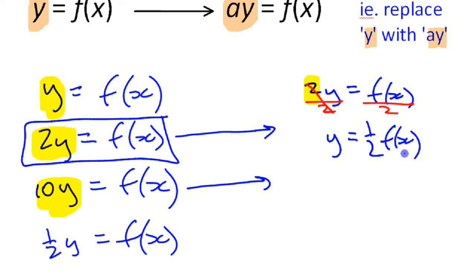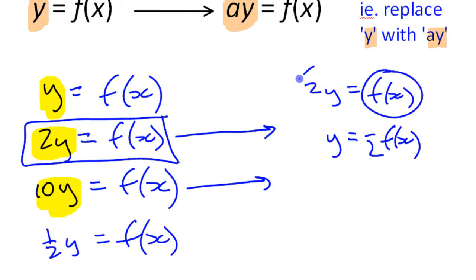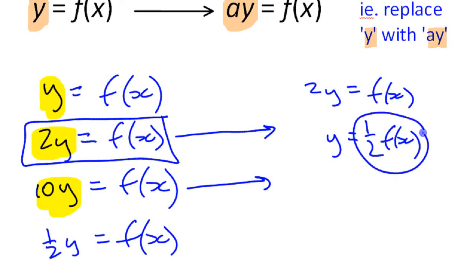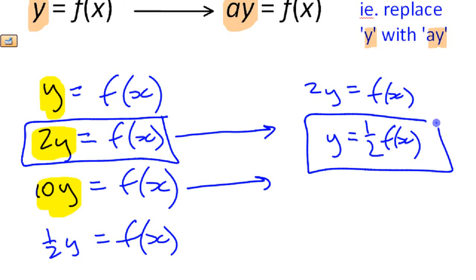The shortcut to think about is: if you have something multiplied by 2 on one side of an equation, that's the same as dividing by 2 on the other side — the inverse operation. So you can make the connection that 2y = f(x) is the same as y = ½ f(x).